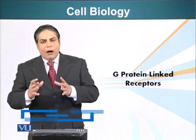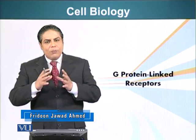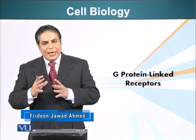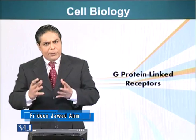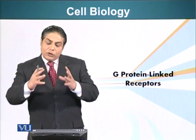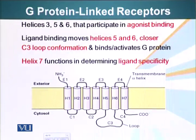G proteins are linked to receptors. These receptors are called G protein-linked or coupled receptors. Let's first look at the structure of these receptors. These receptors have seven transmembrane domains, as you can see on the slide. H1, Helix 1.